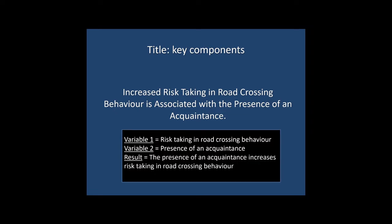The first type of information is the variables associated with the study. In the order in which they occur, variable 1 is risk-taking in road-crossing behaviour and variable 2 is the presence of an acquaintance. The second type of information is the main result or main finding of the study. In this case, it's that the presence of an acquaintance increases risk-taking in road-crossing behaviour. Generally speaking, these are the two key components you need to get across when composing a title: the variables in the study and the main finding generated by that study.